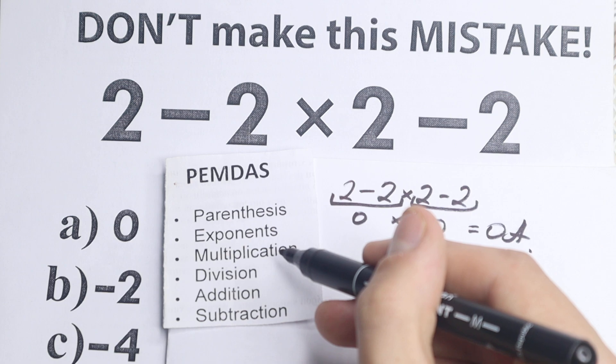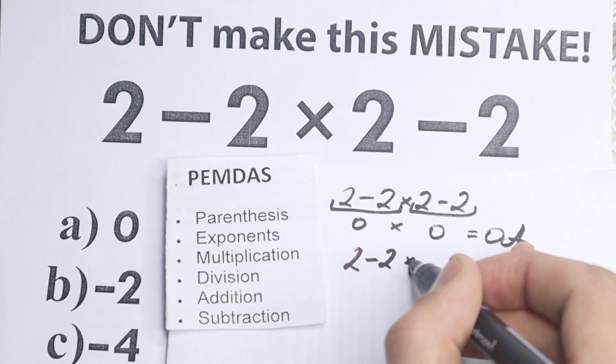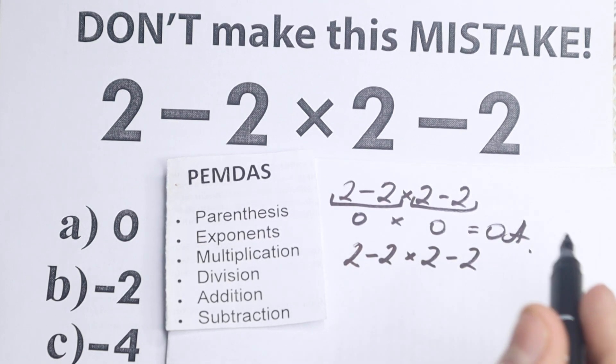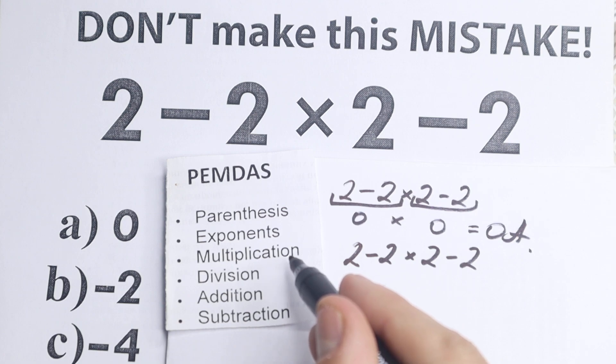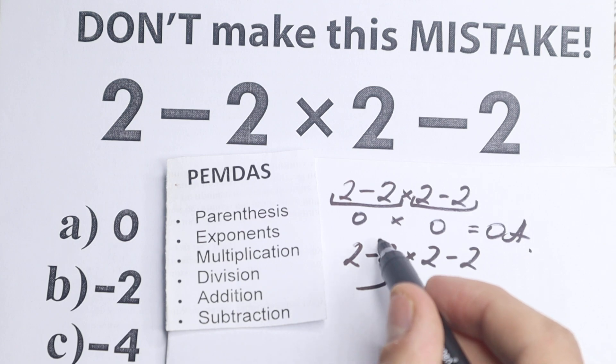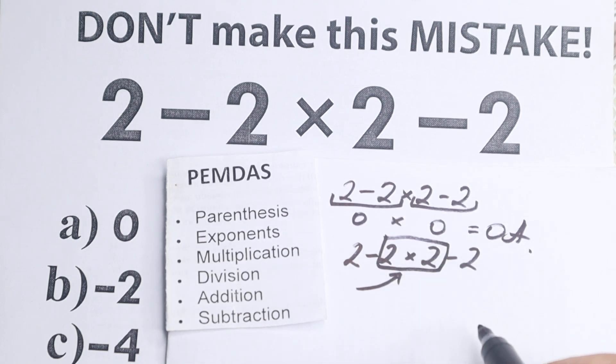So we just skip these two steps. Next, we have Multiplication. So let me rewrite this problem: 2 - 2 × 2 - 2. Let's look at it. We have multiplication. Third step is multiplication and division. What's the sign? Right here we have a multiplication sign. This sign connects these two numbers.